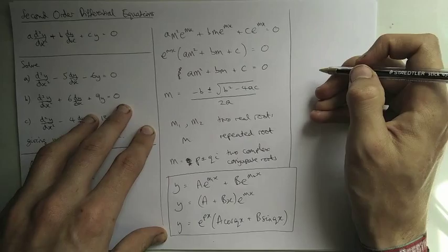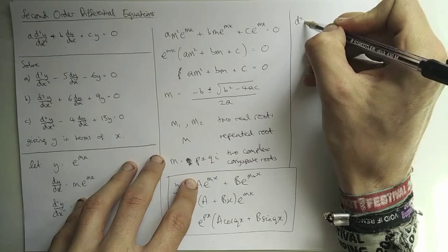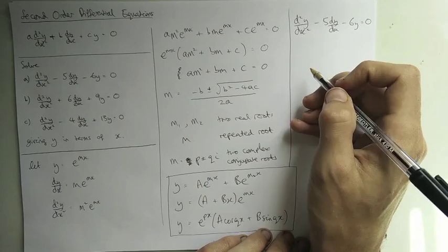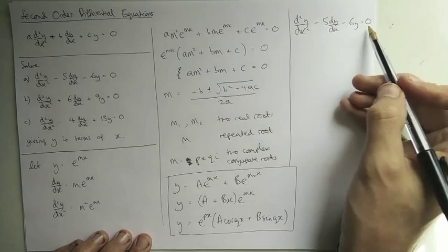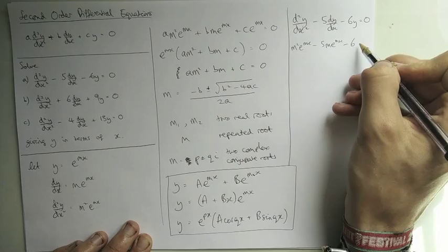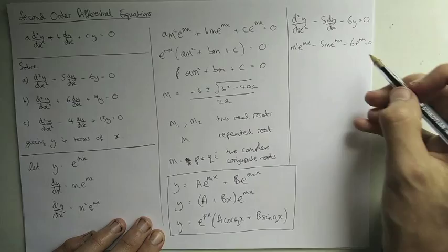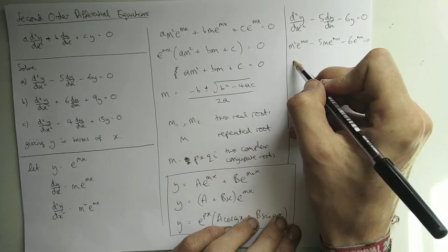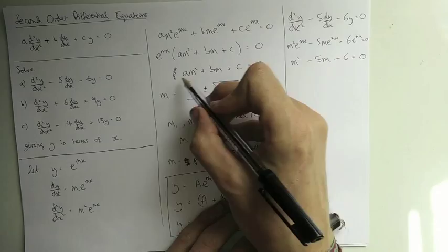Let's try the first example: d²y/dx² − 5 dy/dx − 6y = 0. We substitute y = e^(mx) to get m² e^(mx) − 5m e^(mx) − 6 e^(mx) = 0. We can divide through by e^(mx) since it's non-zero, leaving us with m² − 5m − 6 = 0.